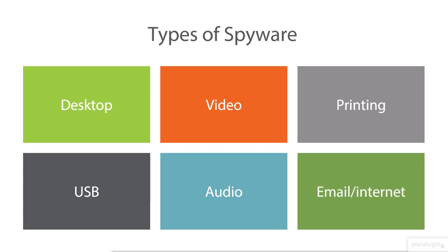There's also spyware distributed via email and the internet. We've talked about malicious websites — it's probably not happening on the big boys like Apple, Google, or Microsoft, but you could find a shady driver download page. I actually got a piece of spyware via a driver download. People also get emails saying, hey, this is the IRS, we're going to start filing charges against you — click here — and the user clicks the link, goes to a site, or executes a script that's malicious in nature.